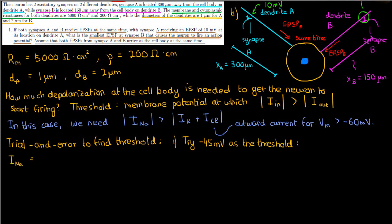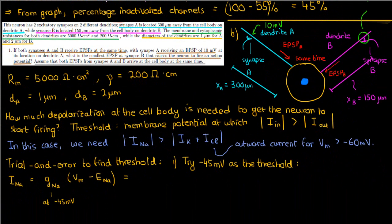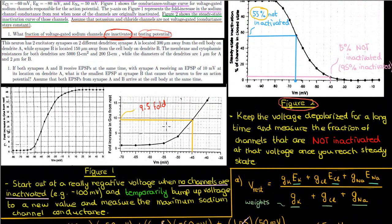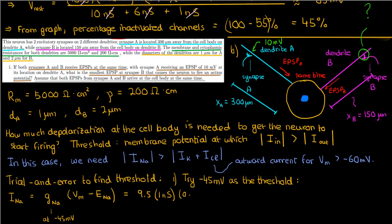At minus 45 millivolts, the sodium current equals the conductance at that voltage times the driving force. From figure 1, a depolarization to minus 45 mV increases sodium conductance by a factor of 9.5. Since the original conductance was 1 nanosiemen, the new conductance would be 9.5 nanosiemens. However, figure 1 assumes no channels were initially inactivated, but we know 55% of channels were available at rest. So we multiply 9.5 by 0.55, since only 55% of voltage-gated sodium channels are available; the other 45% are inactivated and can't conduct.